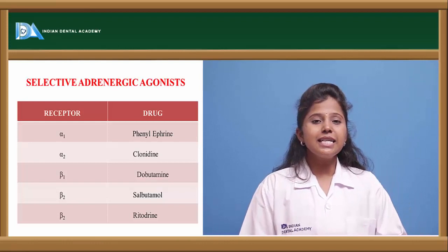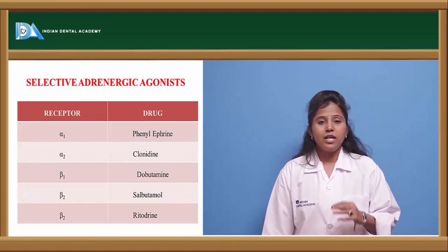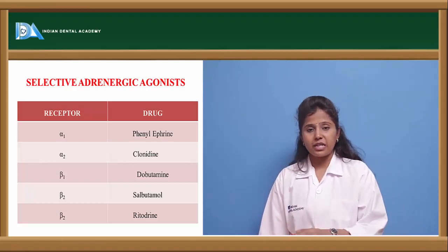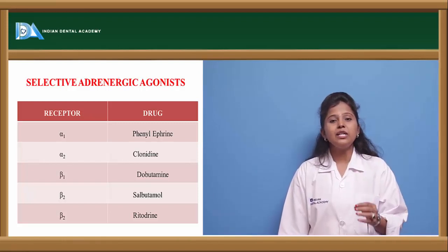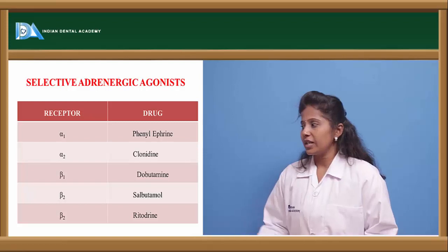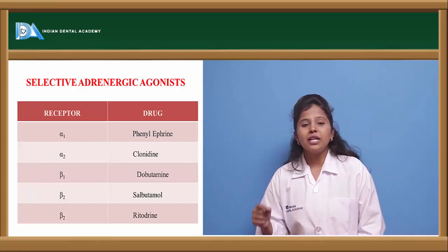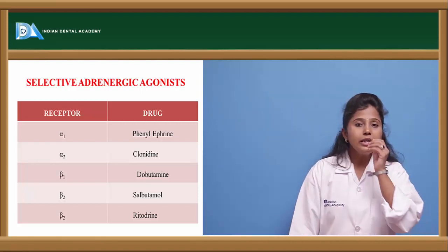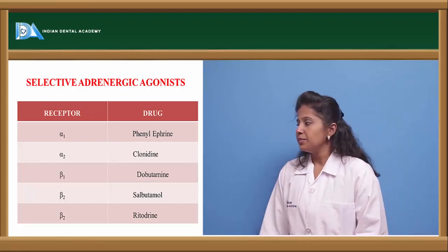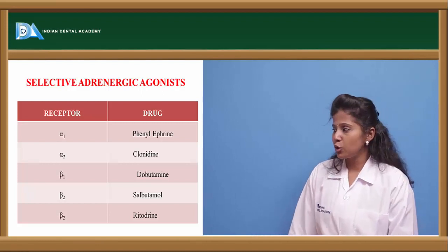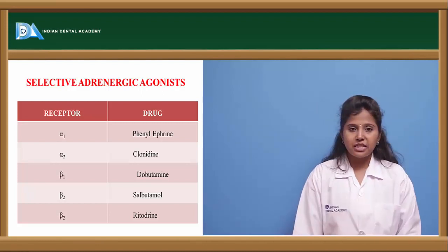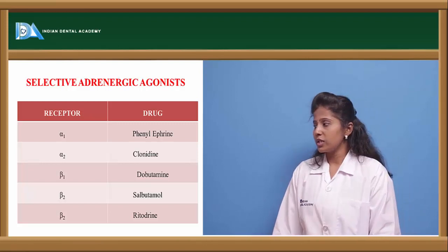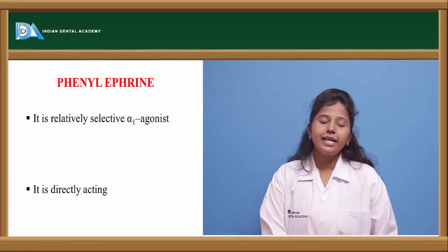Now let us see selective adrenoreceptor agonists. Selective drugs bind only to a particular receptor — alpha-1, alpha-2, beta-1, or beta-2. Drugs include: phenylephrine (selective alpha-1 agonist), clonidine (selective alpha-2 agonist), dobutamine (selective beta-1 agonist), and salbutamol and ritodrine (selective beta-2 agonists).